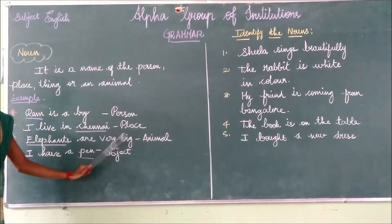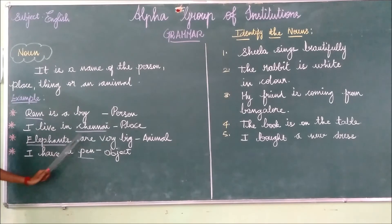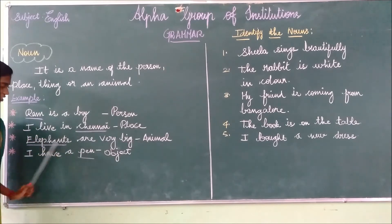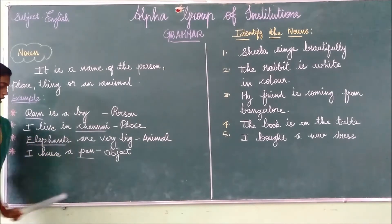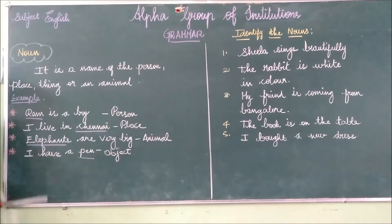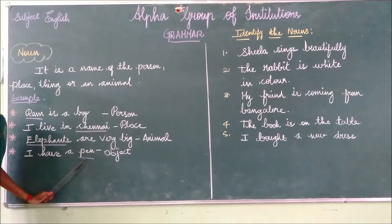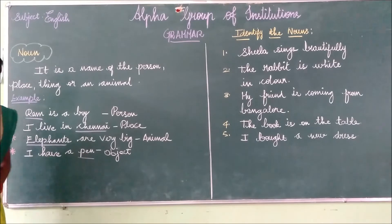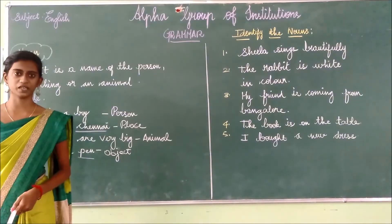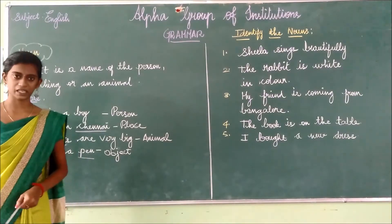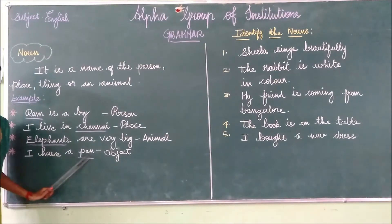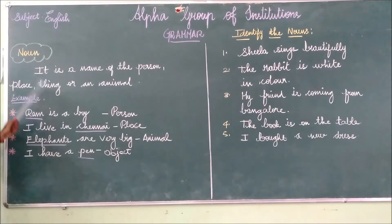Elephants are very big. In this sentence, elephants indicates the animal, so elephant is a noun. Next: I have a pen. What does pen mean? Pen indicates the object. So in this sentence, pen is a noun.